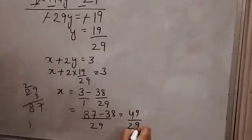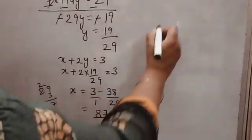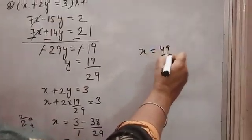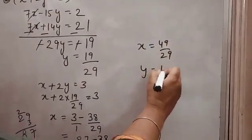So 49 over 29. This is the value of x. So x is 49 over 29 and y is 19 over 29.